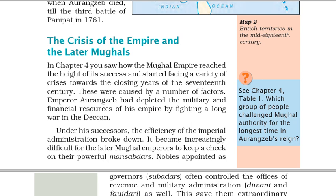The Crisis of the Empire and the Later Mughals. In Chapter 4 you saw how the Mughal Empire reached the height of its success and started facing a variety of crises towards the closing years of the 17th century. These were caused by a number of factors. Emperor Aurangzeb had depleted the military and financial resources of his empire by fighting a long war in the Deccan.